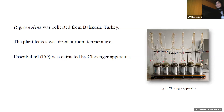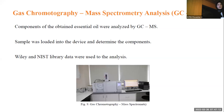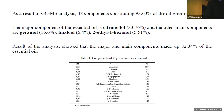Pelargonium graveolens was collected from Balıkesir, Turkey. Leaves were dried and essential oil was extracted by Clevenger apparatus. Characterization was done with gas chromatography-mass spectrometry (GC-MS) analysis, scanning electron microscopy, and Fourier transform infrared spectroscopy. As a result of GC-MS analysis, 8 components comprising 93.63% of the oil were identified. The major compound of the essential oil is citronellol, and other components are geraniol, linalool, and 2-ethyl-1-hexanol.